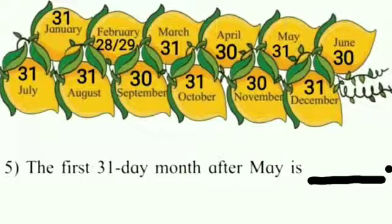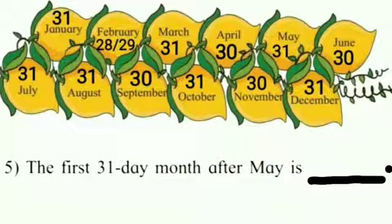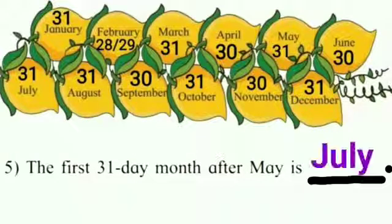So children, see in the picture: after May, which is the first month that has 31 days? Very good, it is July. So we will write July in the given space. I hope you all have understood the concept. Thank you.